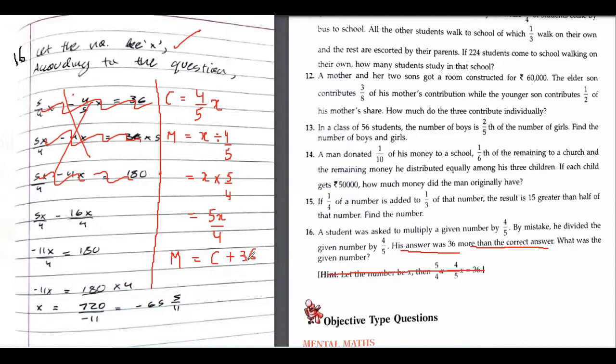The mistake was 5x/4, the correct was 4x/5, plus 36. Now if I shift this 4x to the other side, now your answer will make sense. Now this step is correct.